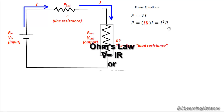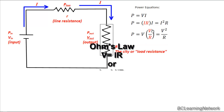A third and final way to solve for power is to substitute for I in our original equation. Using Ohm's law, I equals V over R. Substituting gives us V times V over R, or V squared over R as our final power equation.